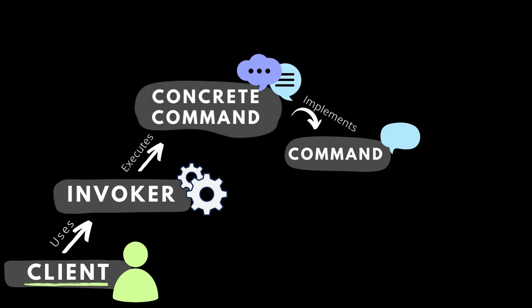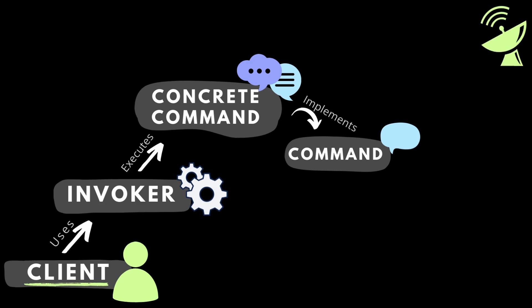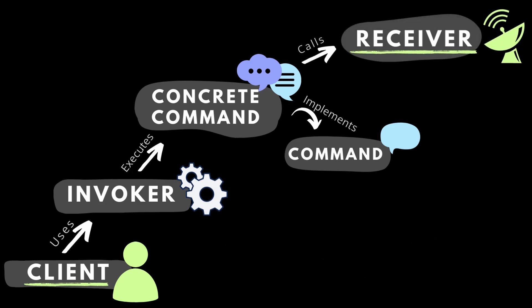The fourth element is the concrete command, which in our case can be a move command, attack command, and all kinds of other commands which will inherit from the command class. The fifth element is the receiver, which has some logic inside and is triggered from the command. To recap: the client is the player who presses keys, the client decides whether to move, it sends information to the invoker which stores the command, the invoker executes the command, and the command sends information to the receiver where finally all of the logic happens.